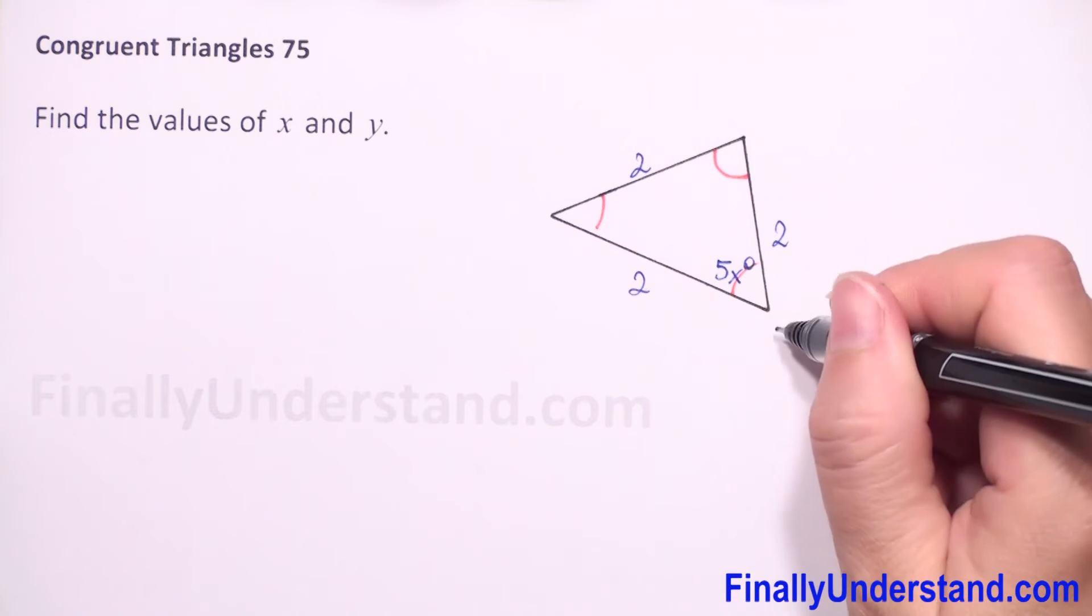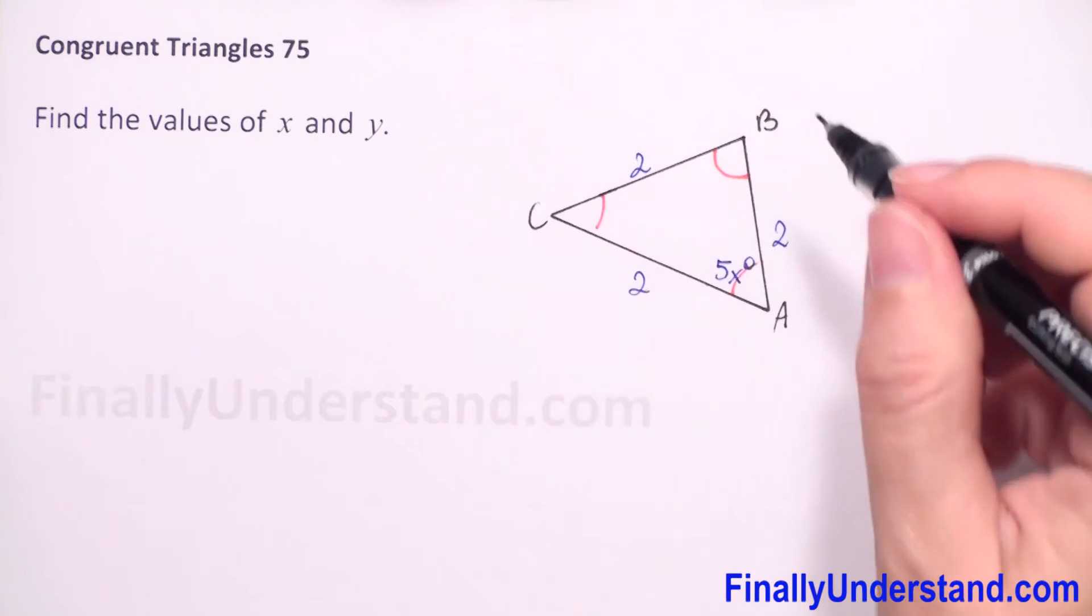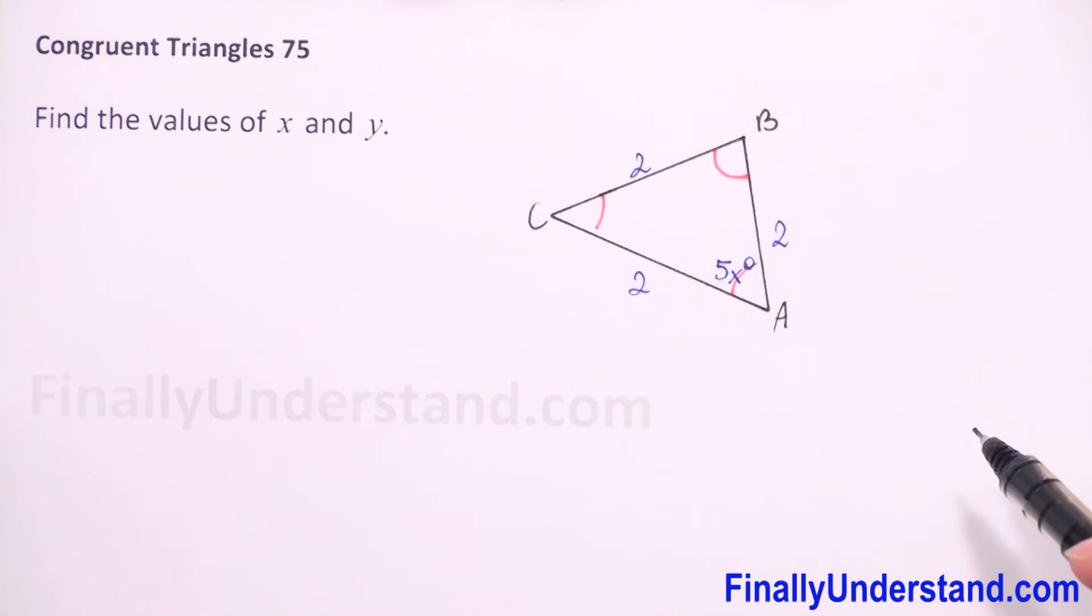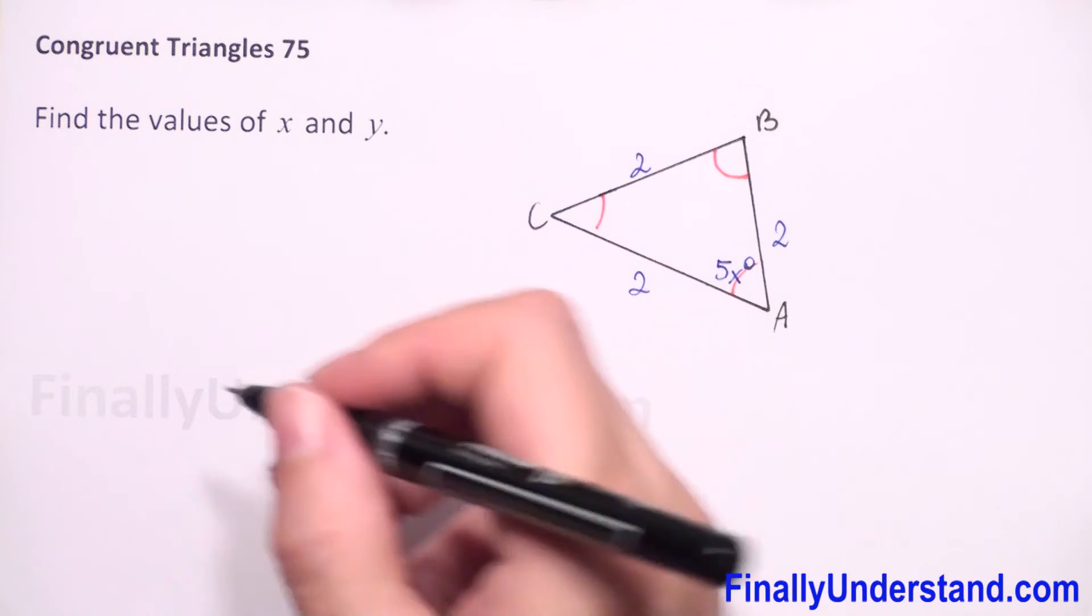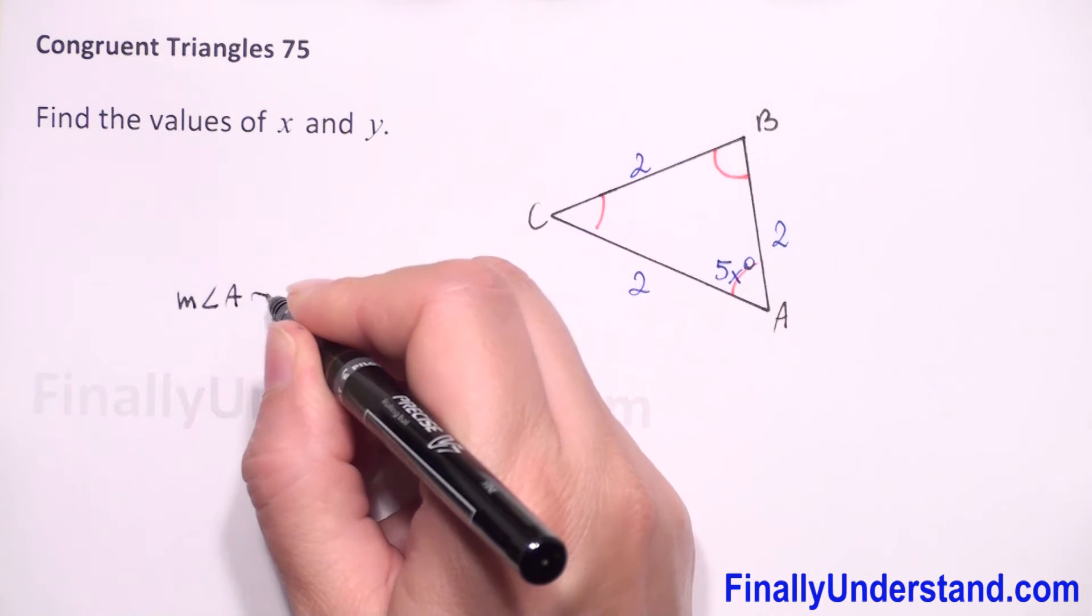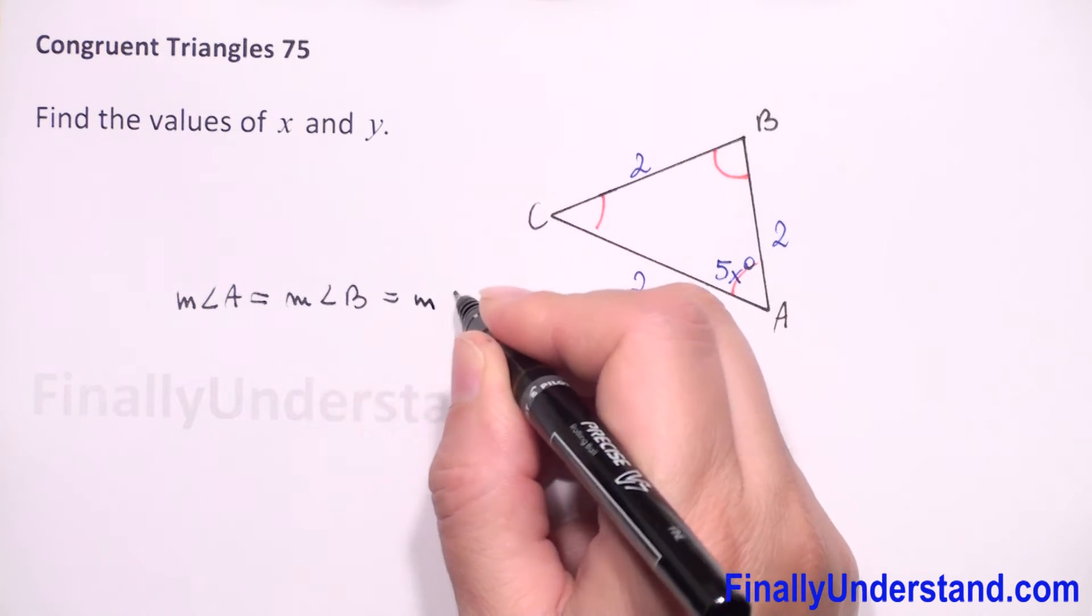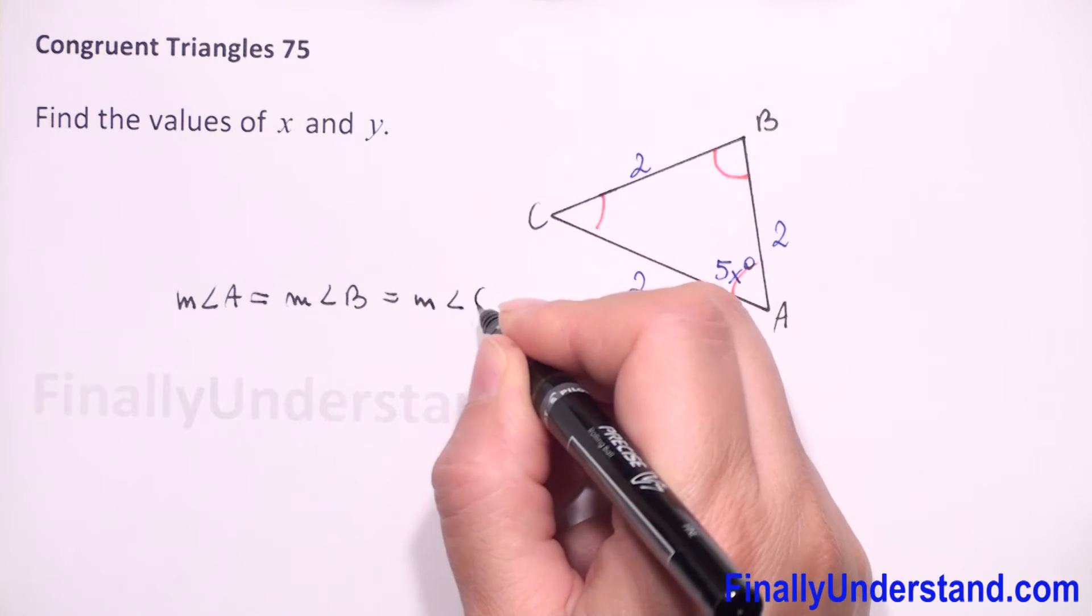So if we put that this is angle A, B, and C, because we have an equiangular triangle, it means that measure of angle A is equal to measure of angle B, and this is equal to measure of angle C.